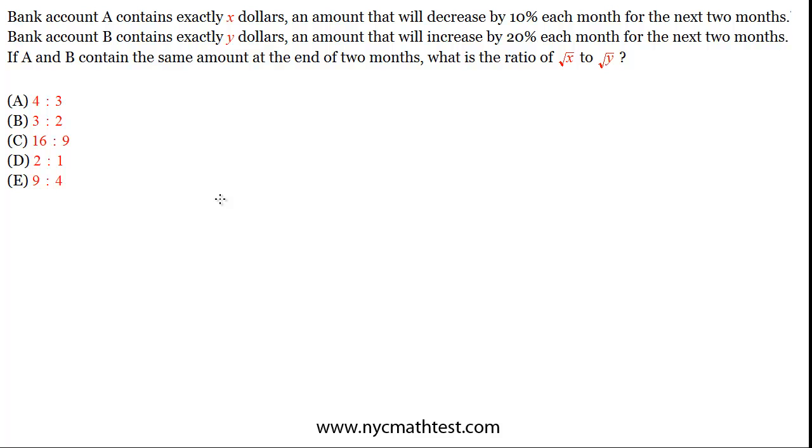One good way to think about this is to make a table. Let's just set up the situation here. We have account A and account B, and we have some initial time, some initial state, call it T0, and then a month down the road we have T1, and then two months down the road we have T2.